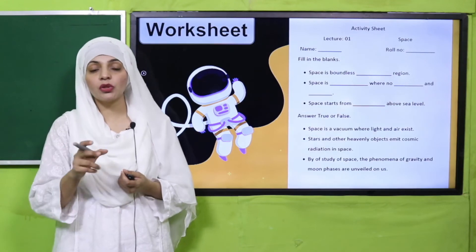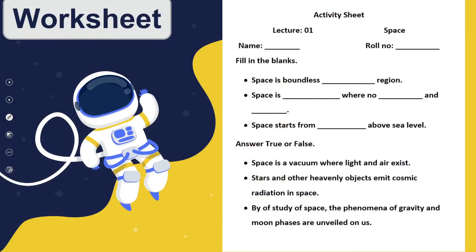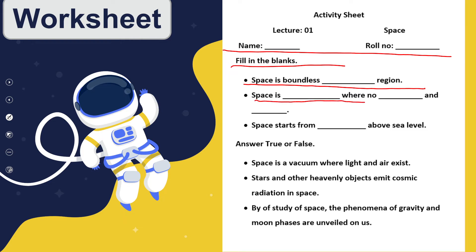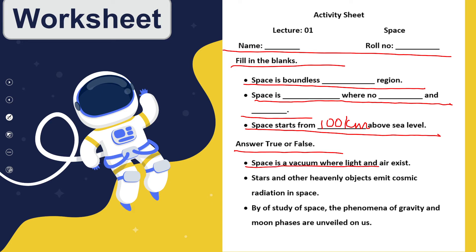Now is the time for practice. You can download this worksheet from the description box below this video, or get it in print from your teacher. Write down your name and roll number, then fill in the blanks: Space is a boundless region. Space is a vacuum where no heat and no light exists. Space starts from one hundred kilometers above sea level. True or false: Space is a vacuum where light and air exist — this is false.